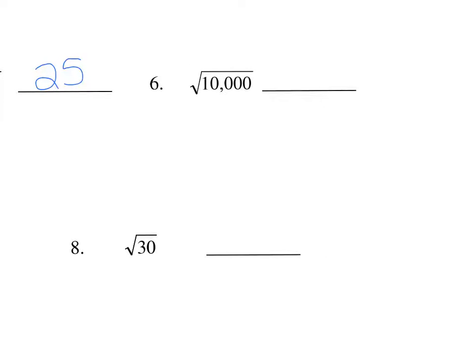This one provides a little bit of a trick. Whenever you're trying to find the square root of a power of 10, all you have to do is cut the zeros in half. In this case, there are four zeros, so the square root will be a 1 with only two zeros, or 100. You just cut the zeros in half.